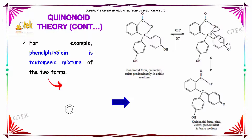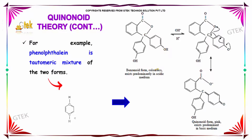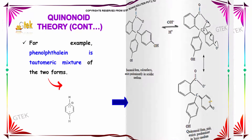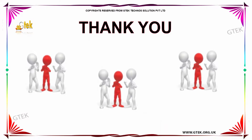A typical example is phenolphthalein, which is a tautomeric mixture of two forms: benzenoid and quinonoid. In the benzenoid form, it is colorless, which is predominant in acidic medium. In the quinonoid form, it is pink, which is predominant in basic medium.